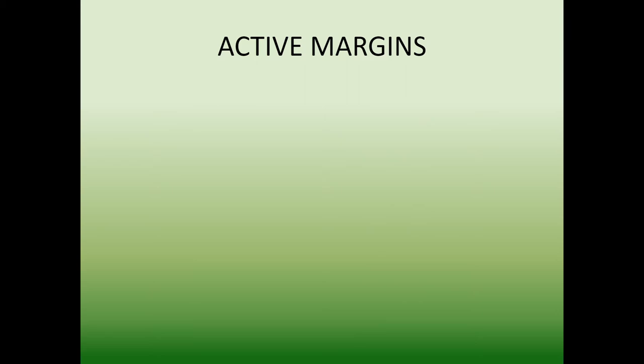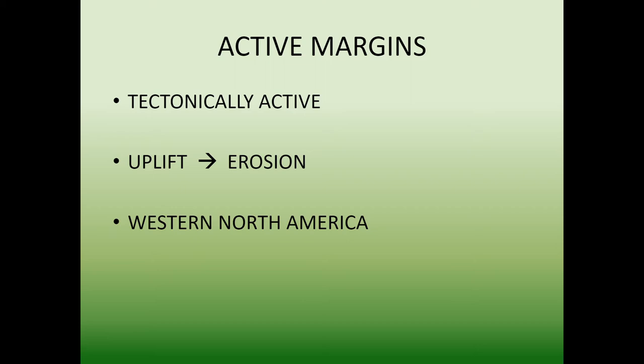Beaches look different depending on the tectonic region they're in. On the west coast, you have mountains that are nearby — we consider that an active margin. There are a lot of faults over there, with an oceanic plate approaching a continental plate. In those active margins, you'll end up getting a lot of uplift and erosion from that. The western U.S. is an example where you'll end up getting different colored beaches, more jagged coastlines, and things like sea stacks and sea cliffs — a rugged coast.